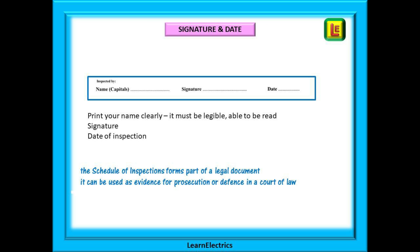Lastly, the signature, the date, and your clearly printed name. The schedule of inspections must be signed and dated by the person carrying out the inspection. It forms part of a legal document and as such can be used as evidence for prosecution or defence in a court of law. Carried out diligently, you can use these forms to prove that at the time of the inspection the work carried out by you was to the required standards — it was safe and fit for purpose.